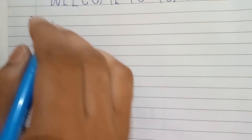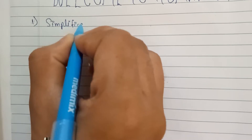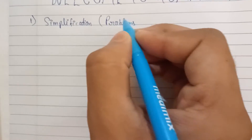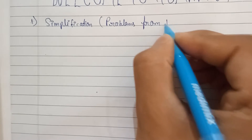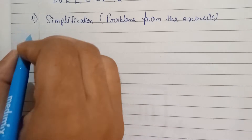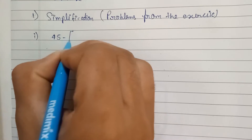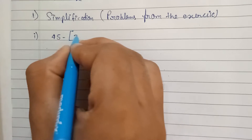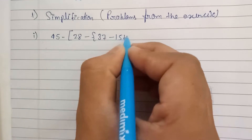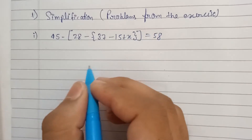The first question is under simplification. These are all problems from the exercise. Our first question: 45 minus bracket 28 minus small bracket 37 minus 15 plus X, close bracket, is equal to 58.